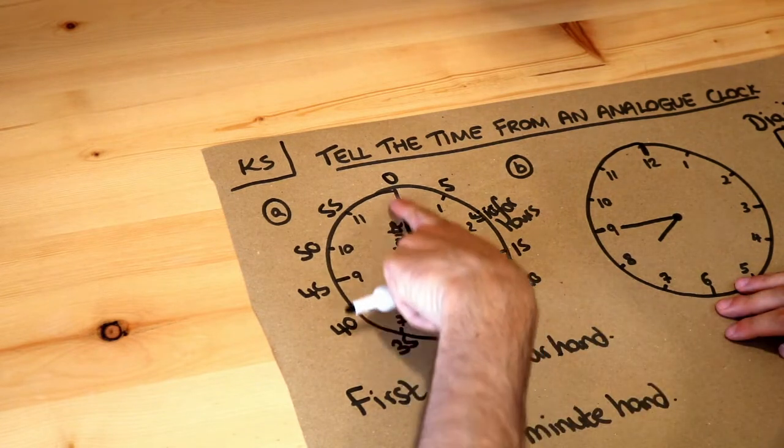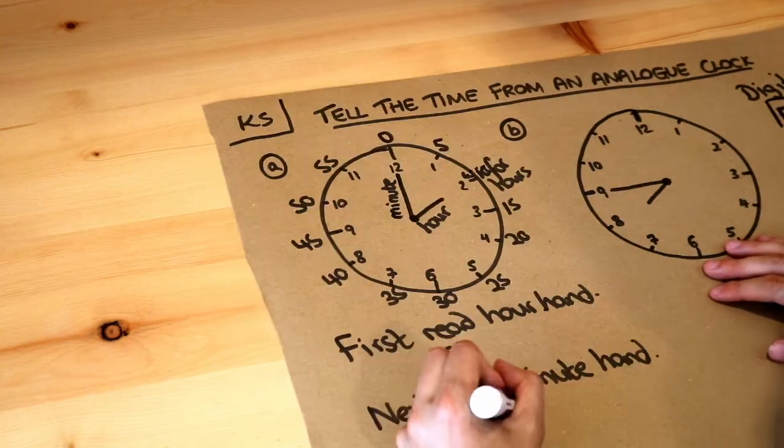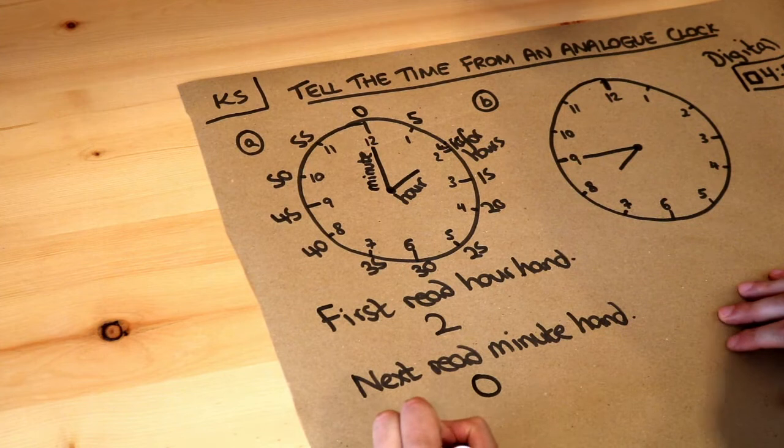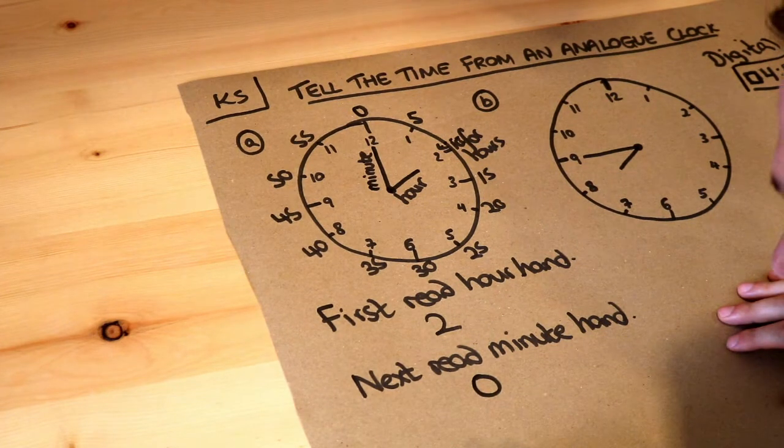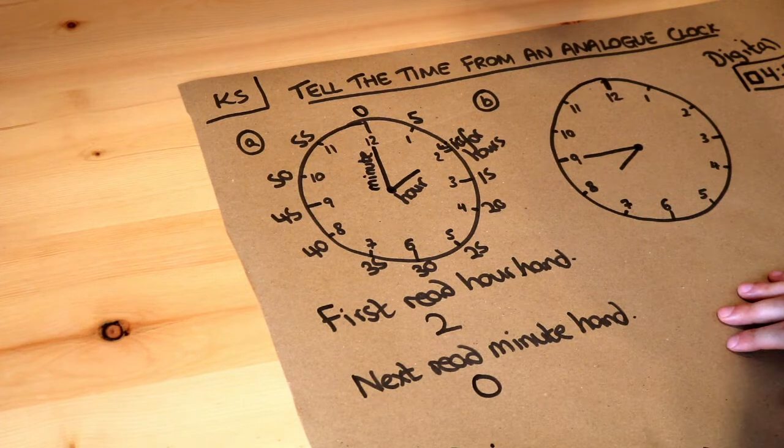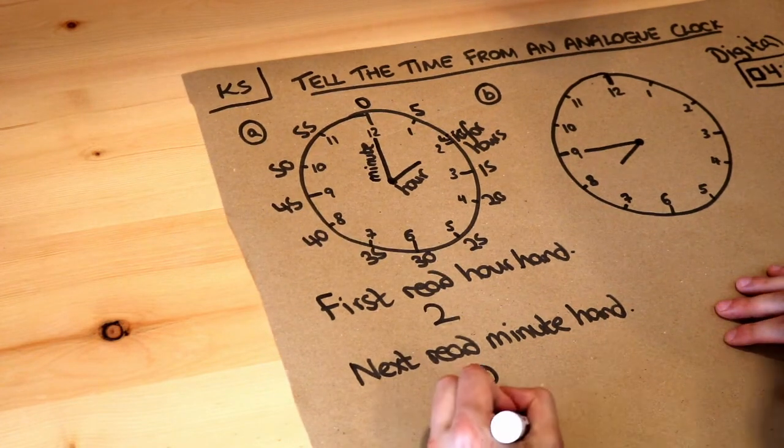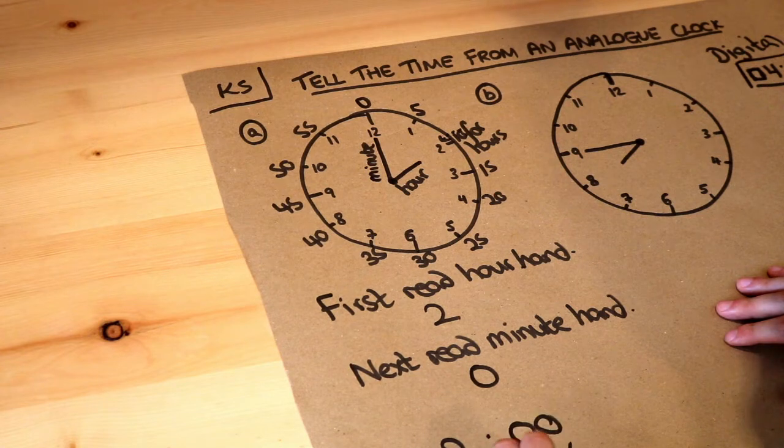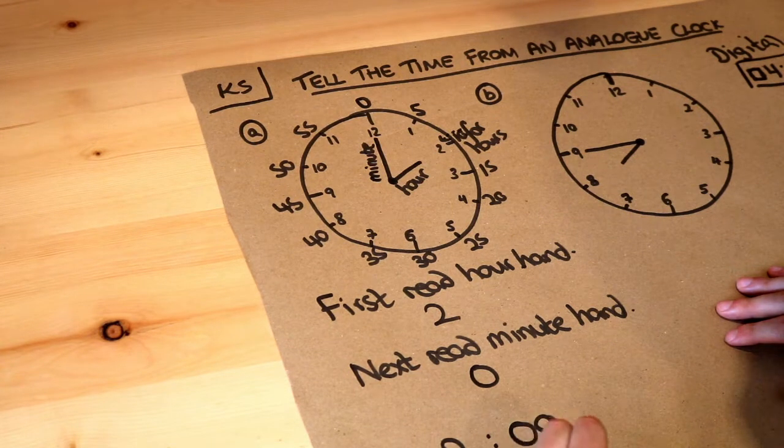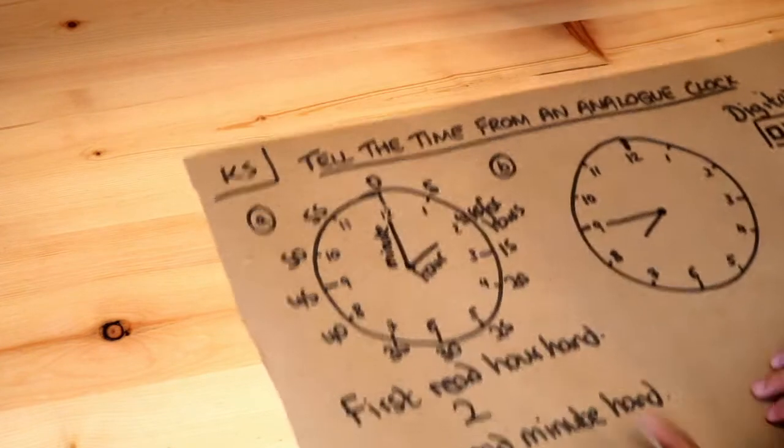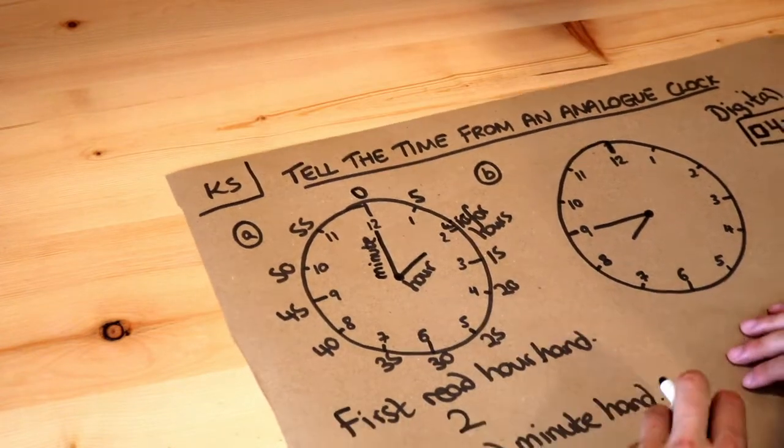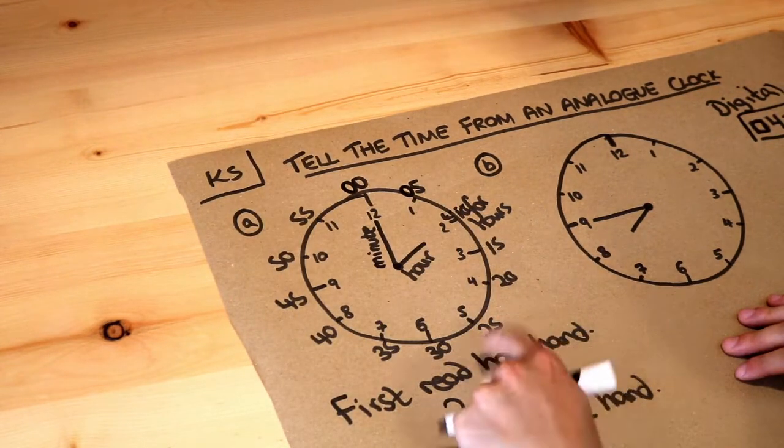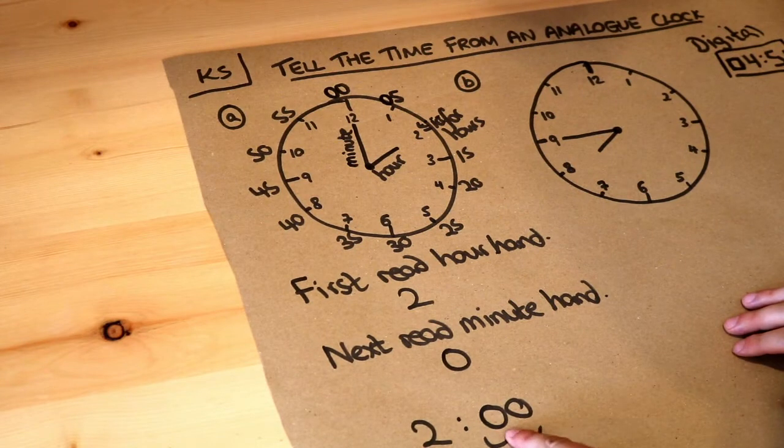So let's look at the minute hand. It's pointing at the 0 here for the minutes. So the minutes is 0, and then we put that together. The hour is 2, and then sometimes we have a space or a colon, and then we put the minutes. Now with the minutes we always have two digits. If it's 0, it's just going to be 00. If it's a single digit number like 5, then we have 05. So I'm going to put the 0 on the front here so that all of these are now two digits. So that's the time: 2:00.